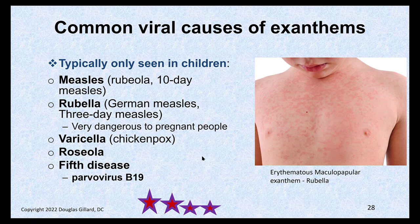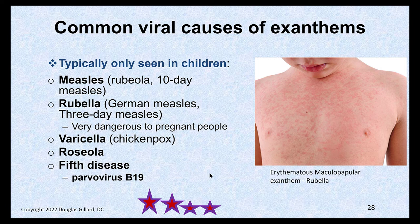What causes these exanthems? Viruses, especially in kids, are notorious for causing widespread rashes. Measles, rubeola, rubella — German measles. This is actually a case of German measles in an unvaccinated kid. Varicella, chickenpox, roseola, fifth disease. These viruses cause reactions under the skin and you get a red, erythematous presentation with raised and flat lesions, so it's a maculopapular exanthem.